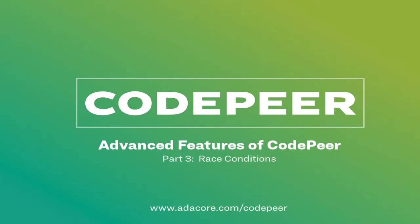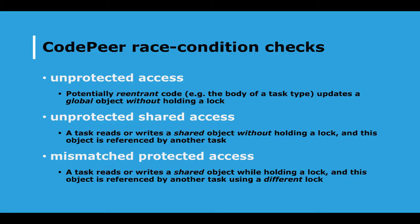Another important advanced capability of CodePeer is its ability to identify race conditions — places where two logical threads of control may potentially update the same shared object at the same time. Unless that object is a protected object, a task, atomic, or somehow otherwise provides synchronization, there's a real danger that the program will have what Ada calls erroneous behavior. That is, you can't necessarily predict exactly what will happen, and it may vary from one execution to the next.